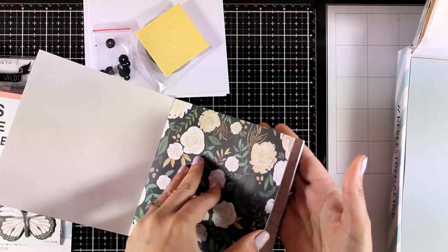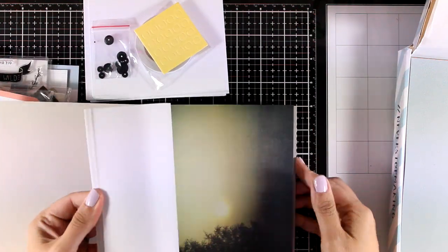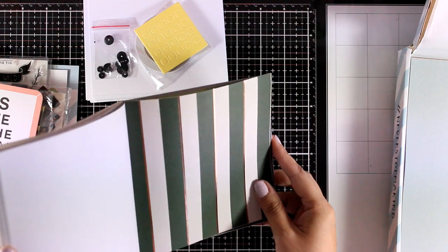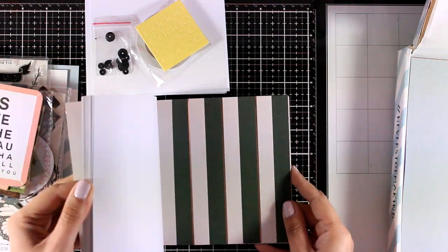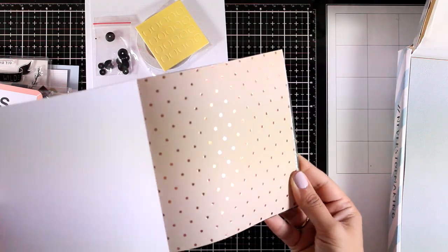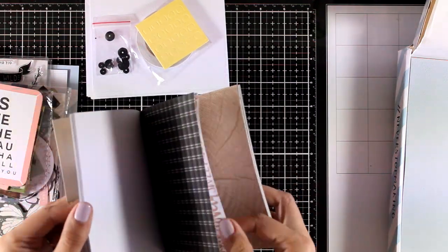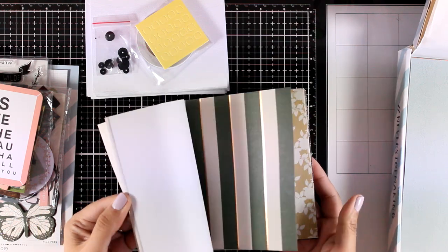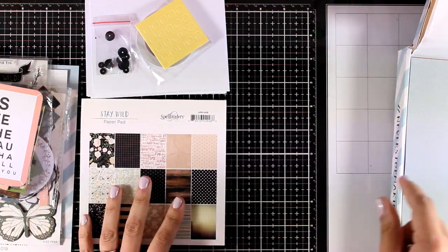And let's take a look at the paper pad included. So this is a 6 by 6 paper pad, of course it matches the colors of the rest of the kit. These pages are thin, they are not double sided and actually some of them have some foiling on top. There are 15 different designs in this pad and you get two pages from each design.